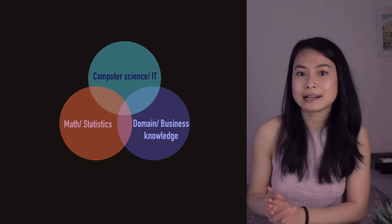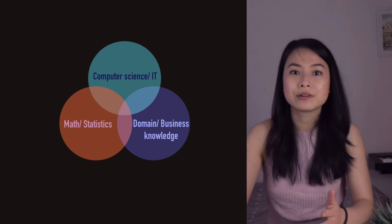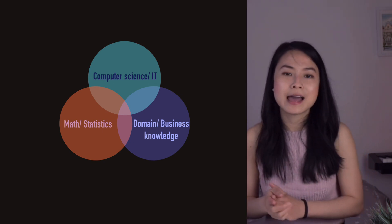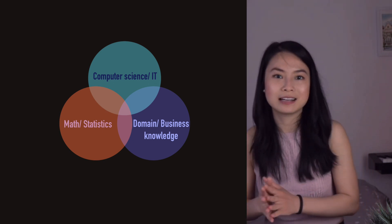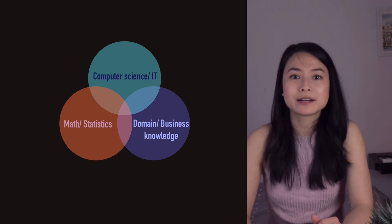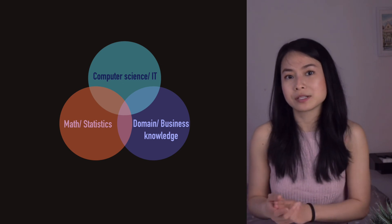As you can see, these roles are quite distinct from each other because they belong to different steps of the data science pipeline and different aspects of a data science project. Therefore, they require very different skill sets, but not completely different. Essentially, the skill set of any data science job can be summarized in three core groups: computer science/IT, math and statistics, and domain/business knowledge. Each data science role requires different ratios of these three skill groups.